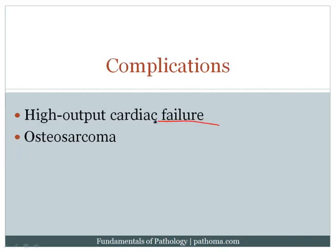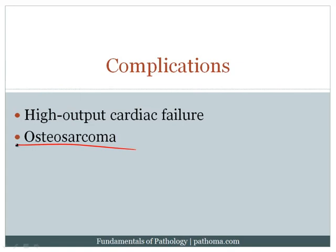The complications of Paget's disease are particularly high yield and include high output cardiac failure, because all the bone remodeling leads to formation of AV shunts, forcing the heart to push through them. An additional complication is osteosarcoma — patients with Paget's disease are at increased risk. If osteoblasts become mutated in the process of this disorder, they can develop into osteosarcoma, which is a malignant tumor of osteoblasts.